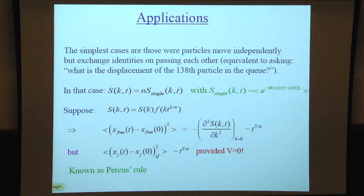Suppose this function satisfies a scaling form S(k) times a function of k times t^(1/α). If you fill this into the expression for mean square displacement, you find it goes as t^(1/α), provided the drift speed on average equals zero. This is known as Percus rule, that the mean square displacement of a tagged particle is the square root of the mean square displacement of an untagged particle.